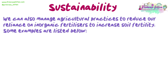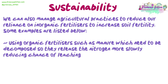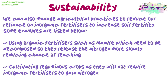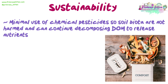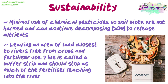We can also manage agricultural practices to reduce our reliance on inorganic fertilisers. Some examples: using organic fertilisers such as manure, which need to be decomposed so they release nitrogen more slowly, reducing the chance of leaching; cultivating leguminous crops, as they will not require inorganic fertilisers to gain nitrogen; minimal use of chemical pesticides so soil biota are not harmed and can continue decomposing dead organic matter to release nutrients; and leaving an area of land closest to rivers free from crops and fertiliser use — this is called a buffer strip, and should stop much of the fertiliser leaching into the river.